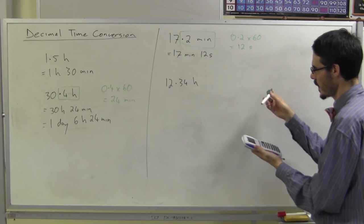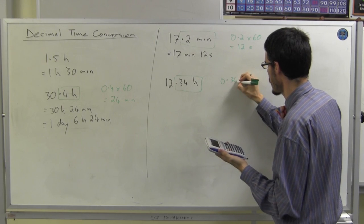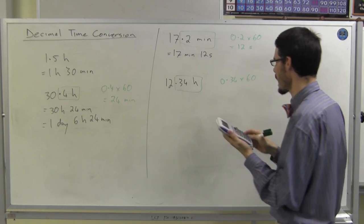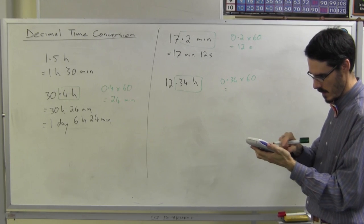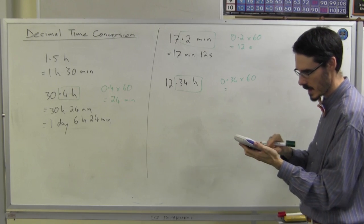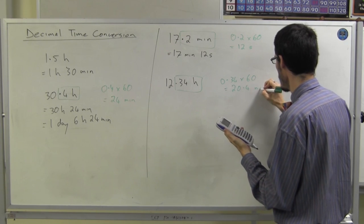So, 0.34 hours times 60, you get minutes. Which is 0.34 times 60, 20.4 minutes.